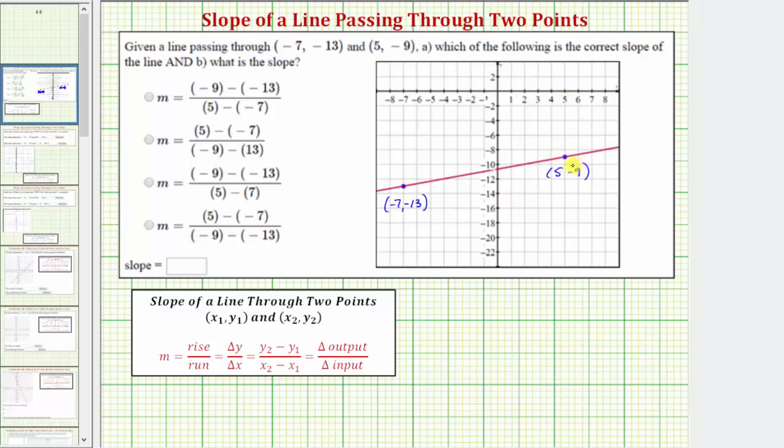So our goal is to find the slope of the line passing through these two points, which is the slope of the red line. The slope of a line is equal to the ratio of the rise to the run, which is given by the ratio of the change of y to the change of x. Notice how the line is slanted upward from left to right and therefore we know the slope is positive.